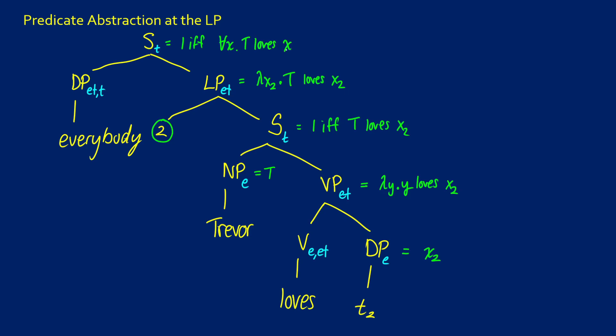So what this would look like: everybody, you're looking for a lambda P dot for all X, PX in this case. When we apply what we have, this is what we're going to get. It's true if for all X, T loves X. Trevor loves everybody and that's what we would expect.